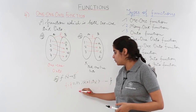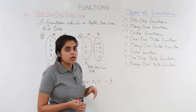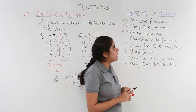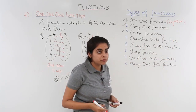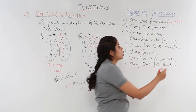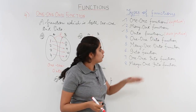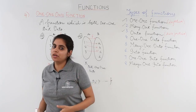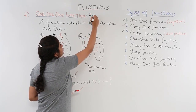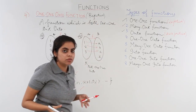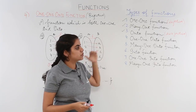It must be noted that a one-one function has another name: it is called an injective function. So wherever you find 'injective,' it basically means one-one. Similarly, an onto function has another name called a surjective function. And one-one onto together is known by a different name — a bijective function. So: one-one is injective, onto is surjective, and one-one onto is bijective. In the next video we'll be covering another type, which is many-one onto.